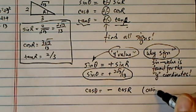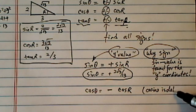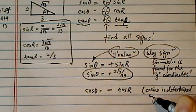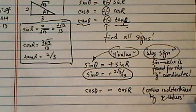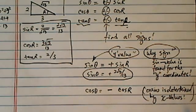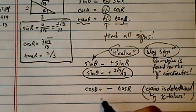cosine is determined by x values. Okay, so in quadrant 2, it's negative. That's why I have a negative sign here.